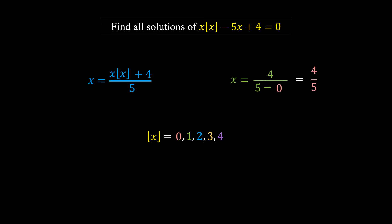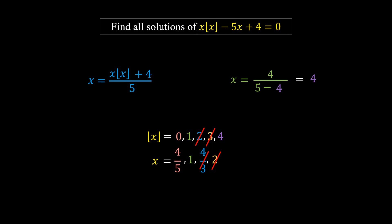If the floor value of x equals 0, then x equals 4/5. If the floor value of x equals 1, then x equals 1. If the floor value of x equals 2, then x equals 4/3, but this is impossible since x must always be greater than or equal to its floor value. If the floor value of x equals 3, then x equals 2, which is also impossible since x must be greater than or equal to its floor value. If the floor value of x equals 4, then x equals 4.